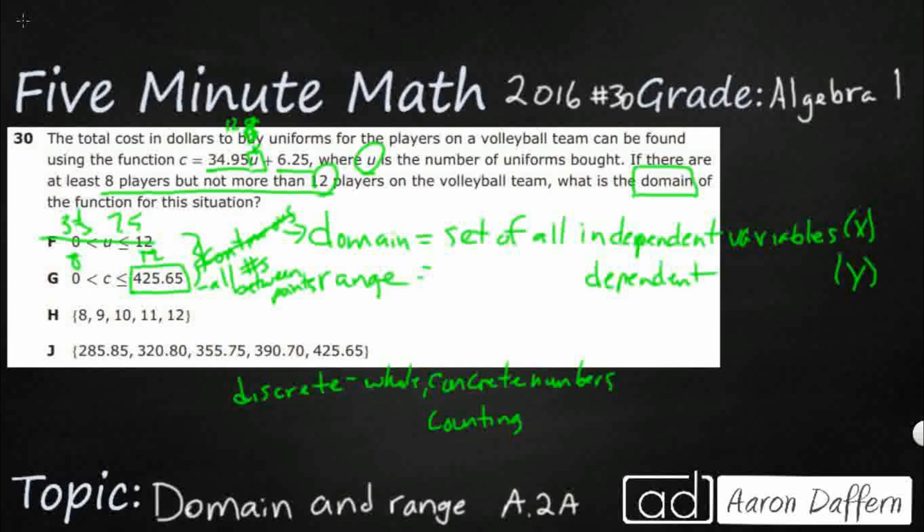So how many players do we have counting numbers? Well, we've got at least 8. So I've got 8 players. I can have 9. I can have 10. I can have 11. But I can have no more than 12.